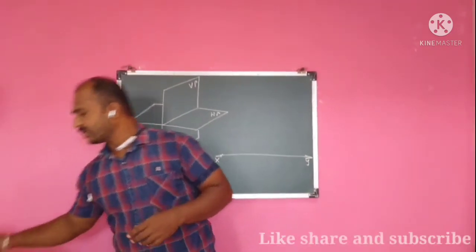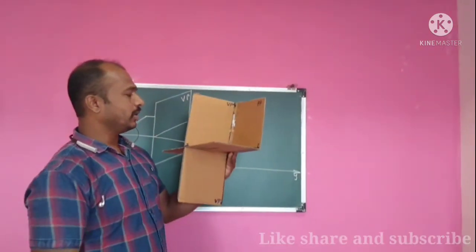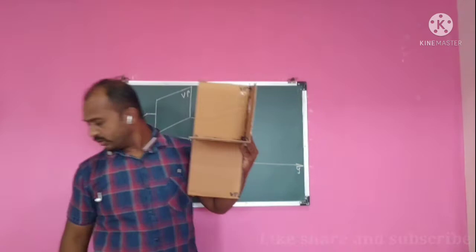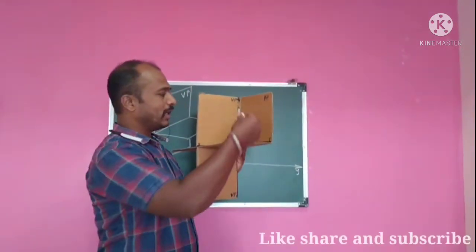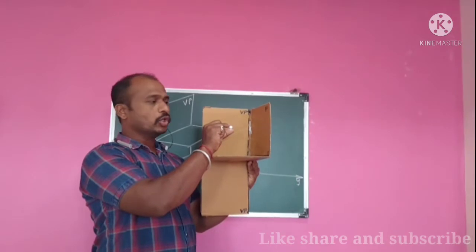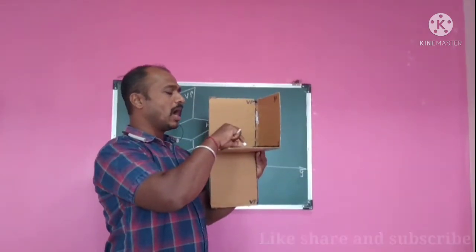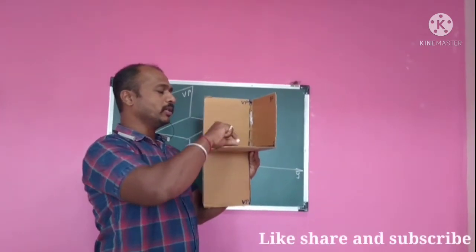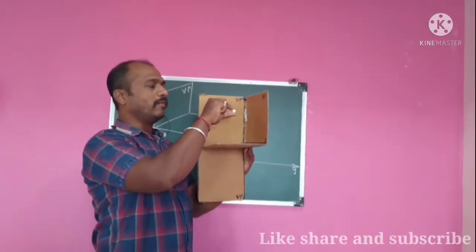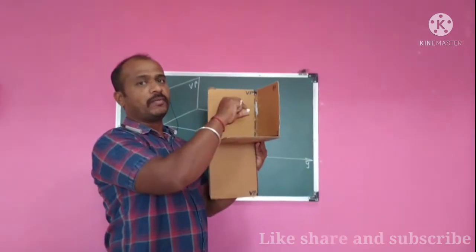A point can lie in various quadrants, as we have seen. The observer is always positioned here — remember, with respect to the observer, whatever the point's position is, that is how we describe it. Suppose the point lies here in the first quadrant. With respect to the observer, the point is above HP and in front of VP. When the point lies in the first quadrant, its position is above HP and in front of VP.